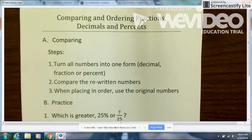Number one: turn all numbers into one form, whether they're all decimals, all fractions, or all percents. Two: compare the rewritten numbers to determine which is bigger or smaller when you have them in that one form.